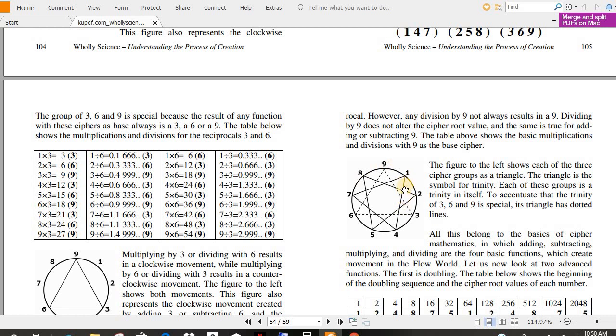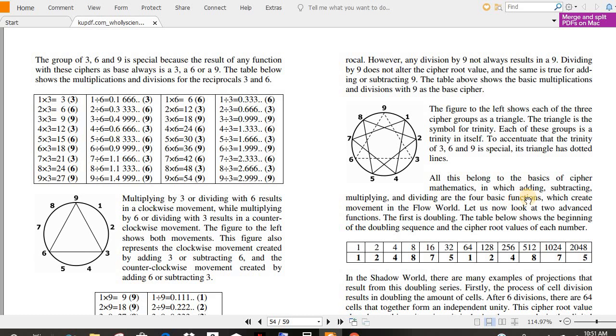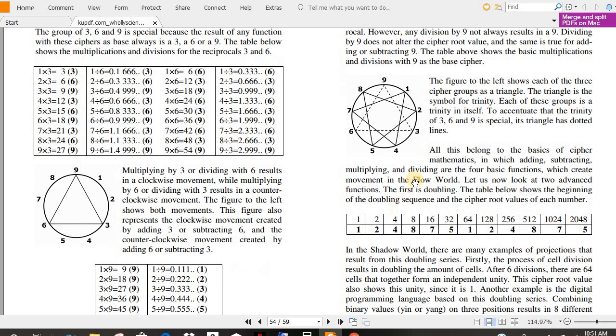So this was the one, four, seven, and then the two, five, eight, and then you see the three, six, nine. All this belongs to the basics of cipher. Multiplying and dividing are the four basic functions which create movement in the flow world. This is the harmonics of creation right here. The math, the algorithm for manifestation of matter.